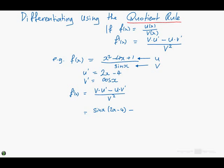Now, we have minus, plus u is x squared minus 4x plus 1. V dash happens to be cos x. And all of that goes over v squared. So sin x, sorry, sin squared x.